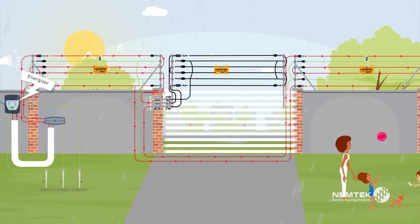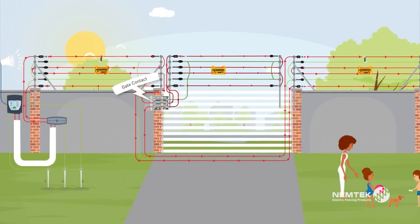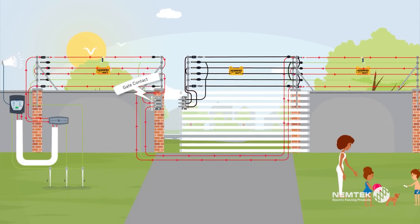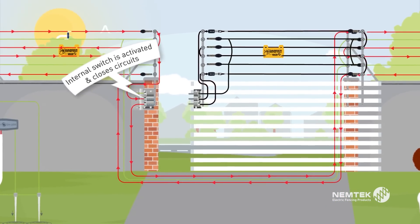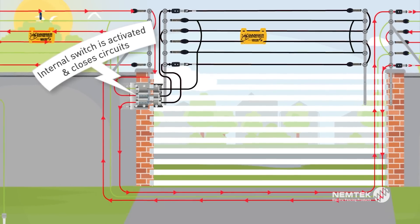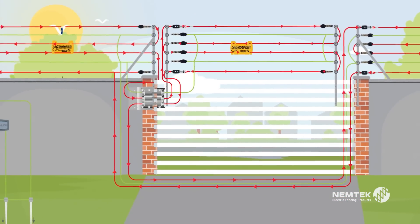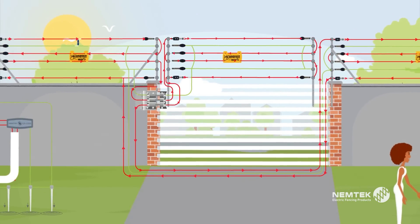The energizer will feed into the switch side of the gate contact. As the gate opens, the three-way gate contact will divert the current flow through its internal switch to complete the circuit. This prevents the energizer from going into alarm mode when the gate is opened.